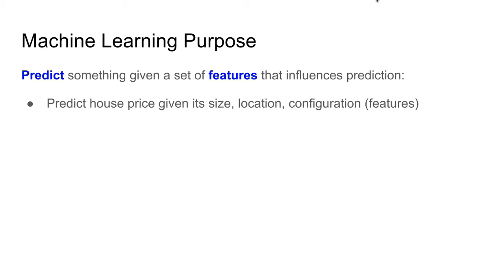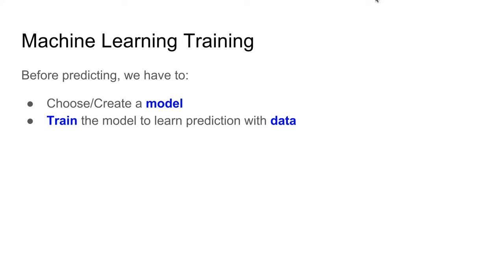Machine learning in its most basic form has the goal of predicting something given a set of features that influences the prediction. For instance, we can predict the house price given its size, location, configuration, etc., which are the features. Before predicting, we have to create and choose a model, and then we have to train the model to learn prediction with the data that we have.